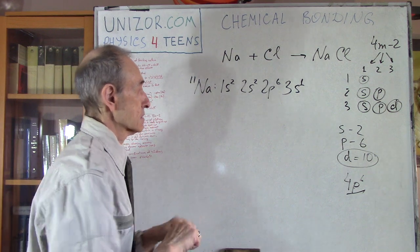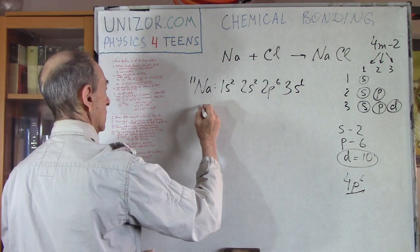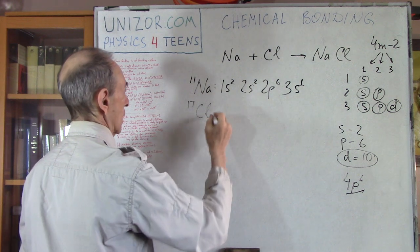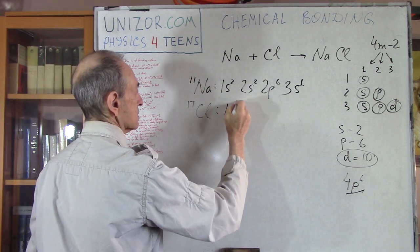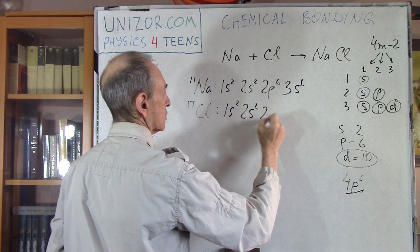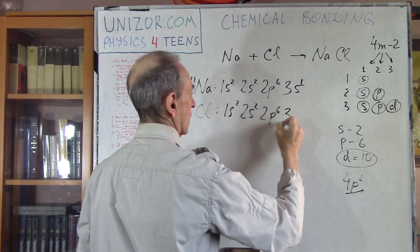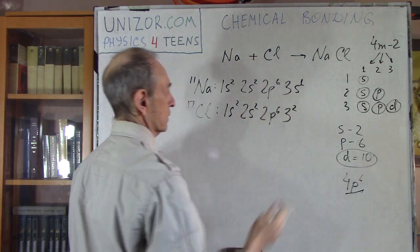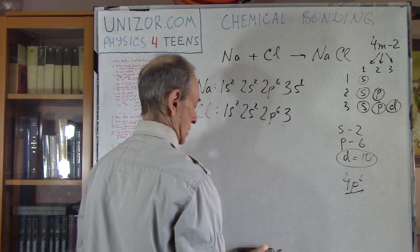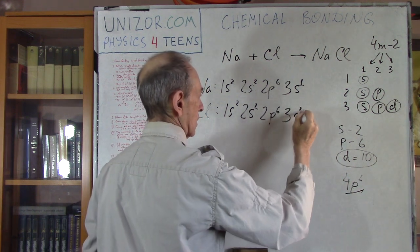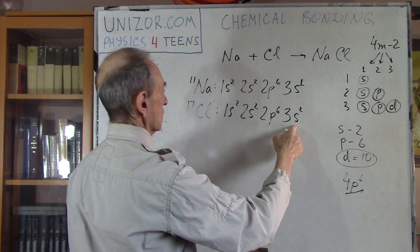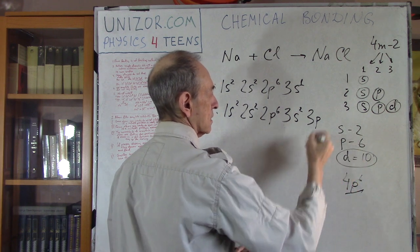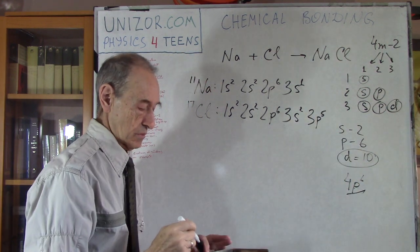Now let's talk about chlorine. Chlorine is element 17. Shell 1: S with 2. Shell 2: S with 2 and P with 6 — that's 12. For shell 3, we fill S with 2, bringing us to 14. The next P subshell can hold up to 6, but we only have 5. Chlorine has one fewer electron than needed to complete its topmost P subshell.